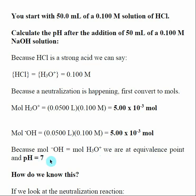The key point here is that I don't really need to do any calculations. In fact, the calculations we've been doing before would lead us to an incorrect answer. What's important to know is that at the equivalence point of a strong acid strong base titration, the pH is equal to 7. I know I'm at the equivalence point because the number of moles of acid I started with equals the number of moles of base I've added.